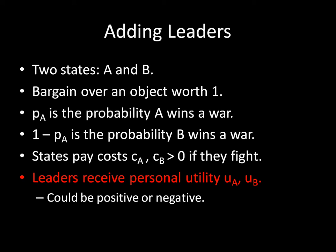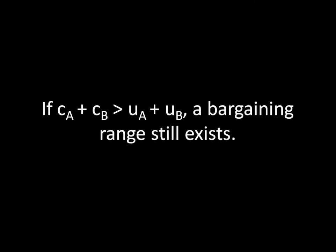Leaders might actually benefit from conflict or might be hurt by conflict. First, if C-A plus C-B is greater than U-A plus U-B, a bargaining range still exists. The left side of the inequality represents the sum costs of war for the states, and the right side represents the sum benefits of the leaders if they fight. So if the costs of fighting are greater than the personal benefits leaders receive from fighting, a bargaining range should still exist.